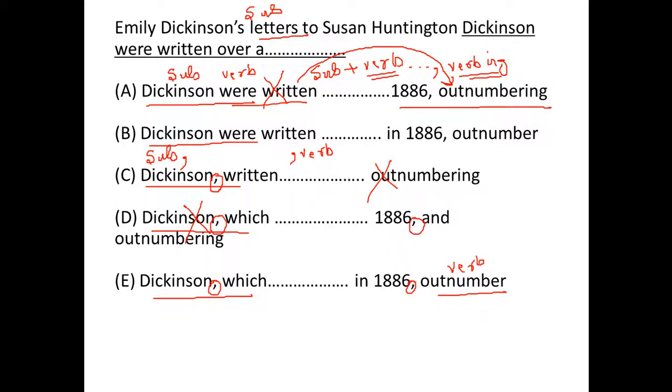Now, in B if you read it says period that begins and ended. We have parallelism error. Period that begins is not parallel to period that ended. Also, here outnumber is modifying 1886. Outnumber cannot modify 1886.